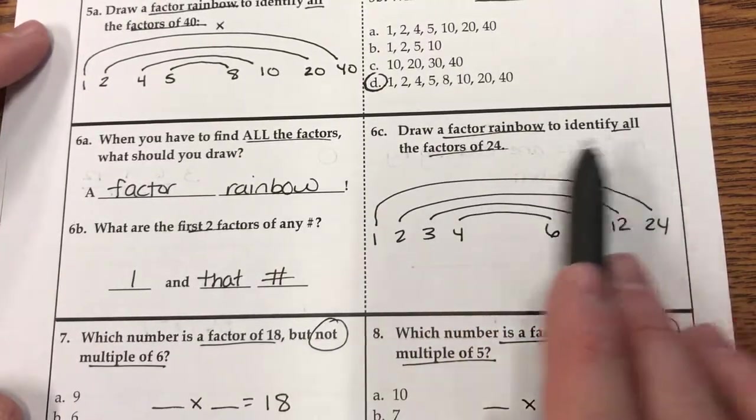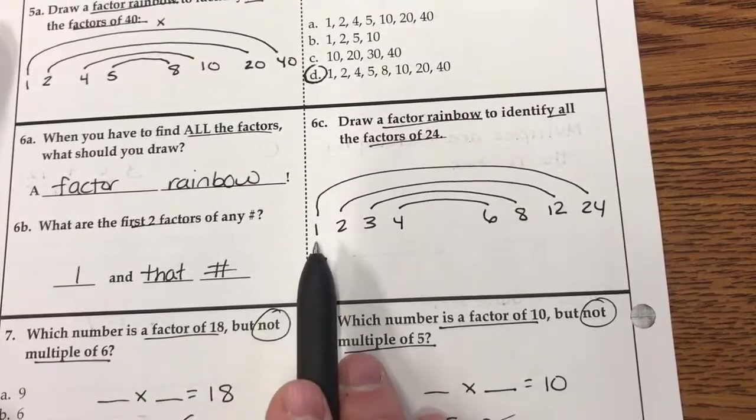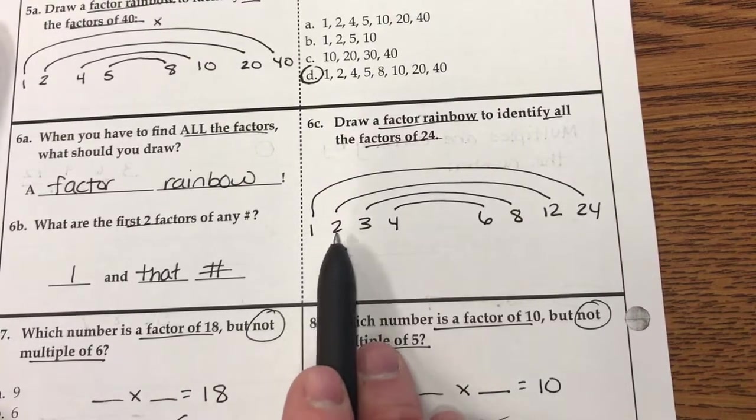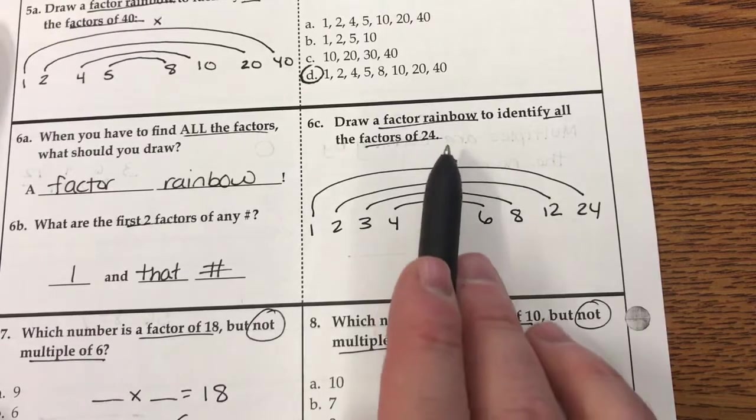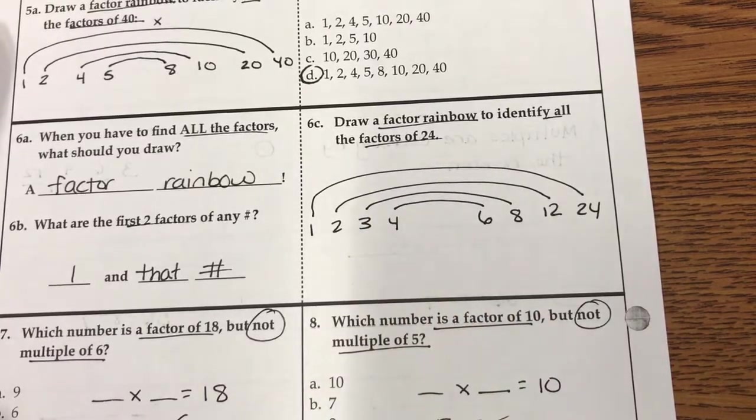Here's my factor rainbow to identify all the factors of 24. So I tested 1, 2, 3, and 4. And obviously 5 doesn't work because all multiples of 5 end in 5 or 0.